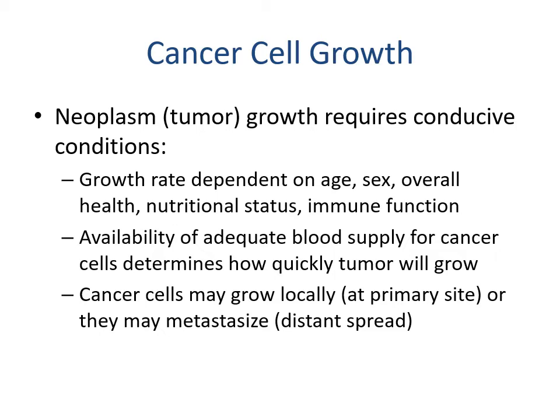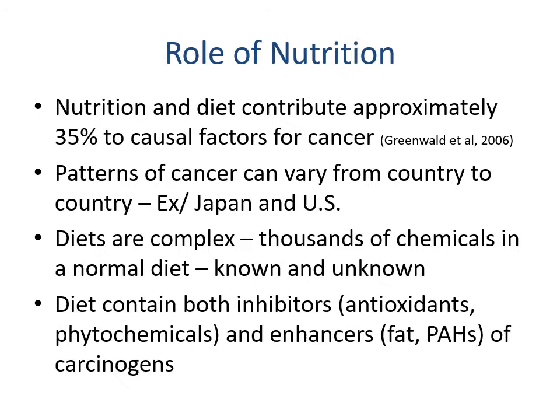A neoplasm requires several conditions to grow. Growth rate is dependent on age, sex, overall health, nutrition status, immune function, and the availability of an adequate blood supply. Cancer cells need oxygen and nutrients — supplied through blood — to replicate. They may grow locally at the primary site or metastasize to a distant site via blood flow.